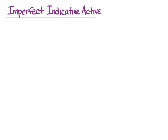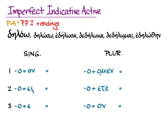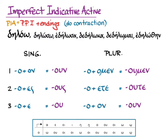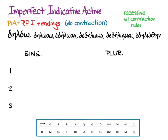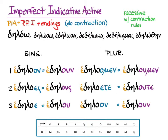Now for the imperfect indicative active. We need the past indicative augment, still the first principal part, and the endings. With the omicron and the imperfect active endings, we'll contract to get: oun, ous, ou, oumen, oute, oun. We'll be doing recessive accent with contraction rules. In practice, that's the augmented stem plus endings, contracted to look like this.